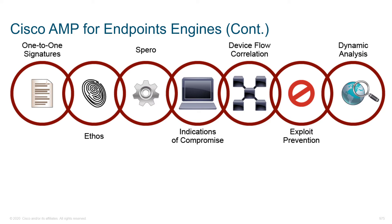All of this leads us to the term indications of compromise. How did we know that we were owned? We saw certain things happening within our DLL, or we saw the web browser writing to file directories that it maybe shouldn't have been.